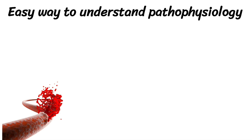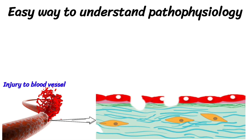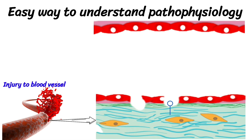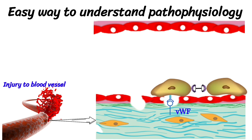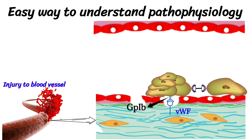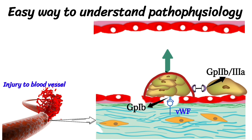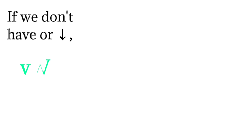To understand the pathophysiology of von Willebrand disease: when there is injury to blood vessels, von Willebrand factor is released and attaches to collagen as well as to platelets, with the help of glycoprotein 1b. Activated platelets then attract other platelets and form a platelet plug, with the help of receptor GP2b/3a.